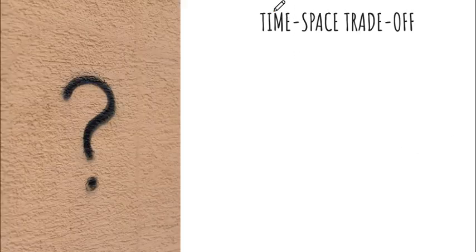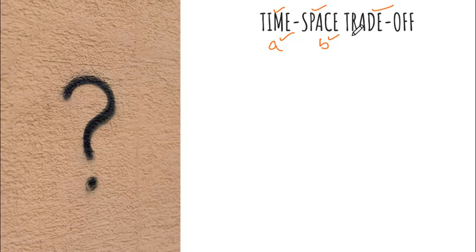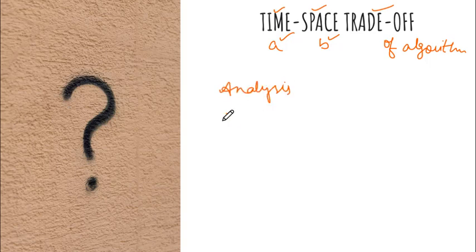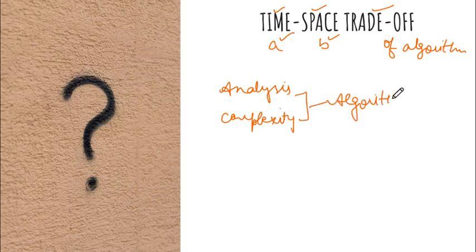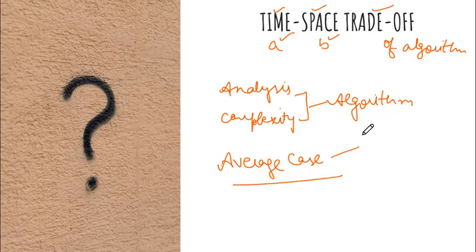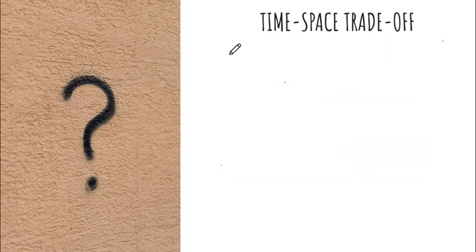Now let's combine all these terms. In the previous example we used A and B — let's say A is time and B is space. So we are going to understand time-space trade-off for an algorithm. This is important because it helps in analysis and finding the complexity of an algorithm, which in turn helps us pick the best algorithm. The best algorithm is one that takes less time and less space — that's the average case we want to aim for.